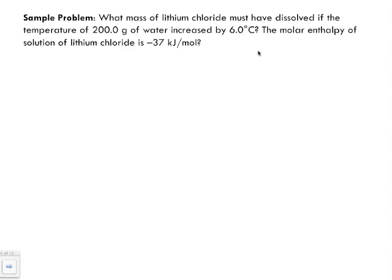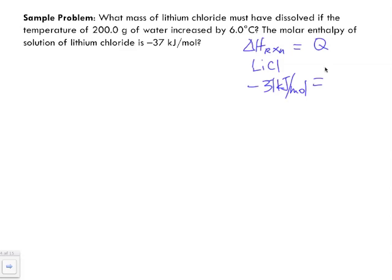The key thing with this question is that delta H of the reaction is equal to q. So for this reaction with lithium chloride, our delta H is minus 37 kilojoules per mole. Because this delta H side is negative, the q value is going to be positive.